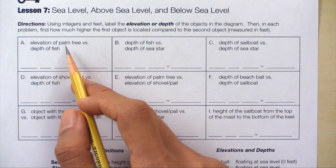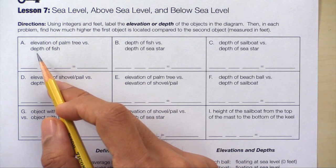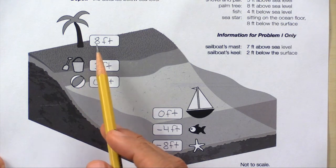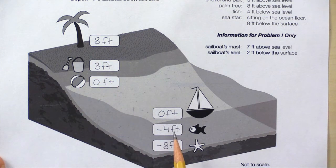Let's go over three examples, starting with box A. Here we have the elevation of the palm tree versus the depth of the fish. So we'll write down 8 minus negative 4.